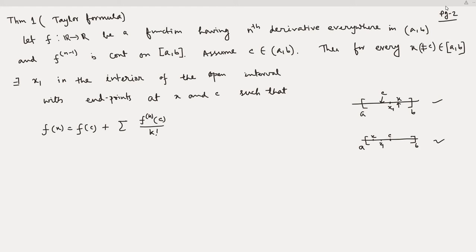The Taylor formula states that f(x) equals the sum of terms involving x minus c to the power k, plus a remainder term: the n-th derivative of f at x_1 over n factorial times (x − c)^n.